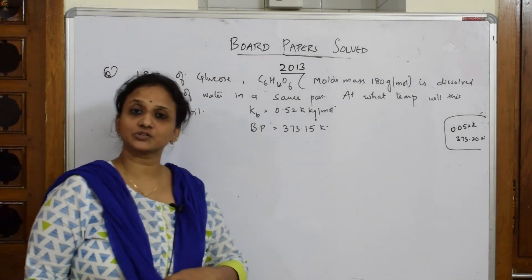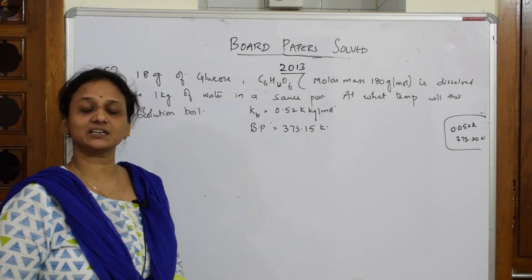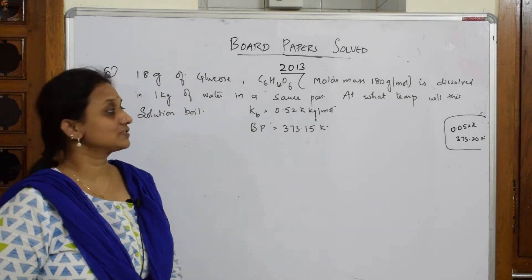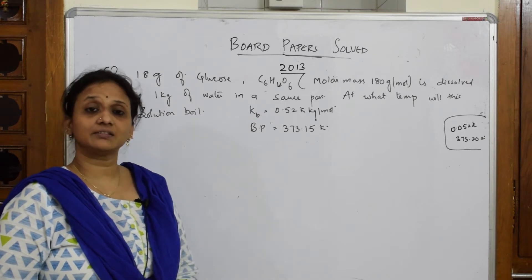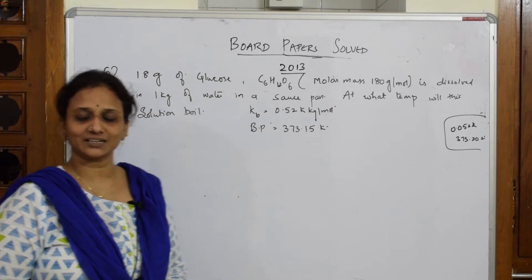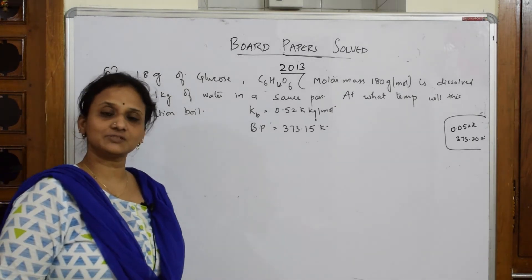Now let's come back to the 2013 board papers. We've been seeing in all the previous papers that you compulsory have one numerical worth three marks, and definitions or differences may be for one or two marks. So please, let us not take risk. Practice all the numericals which I have taught you.